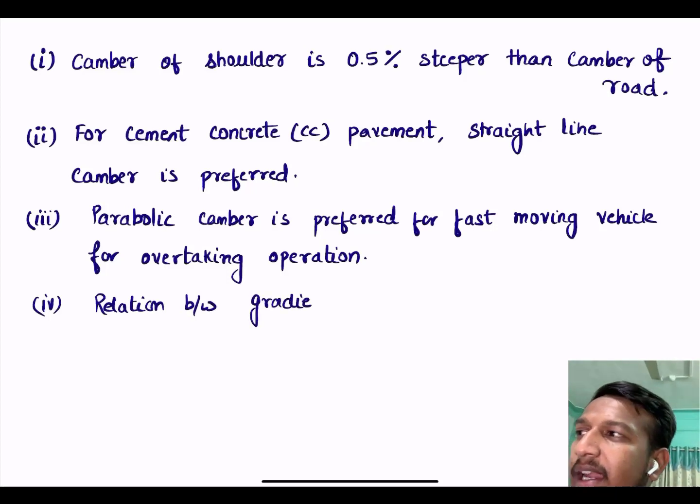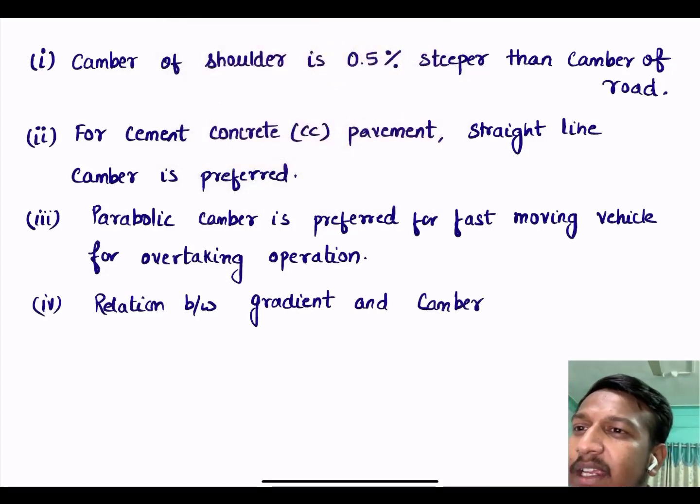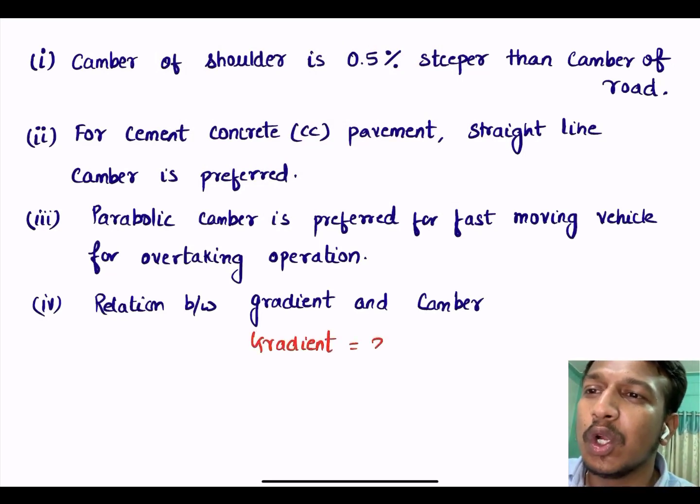Relation between the gradient and camber. We know that gradient equals twice of camber. Therefore gradient equals 2 into camber. Therefore G equals 2C.